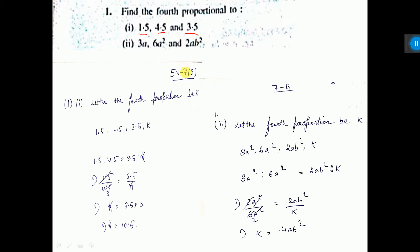So, consider the fourth proportional as K. The numbers will be this, this, this, and this. Now, there is one formula: first proportional is to second proportional equals third proportional is to fourth proportional. That means, first by second equal to third by fourth.